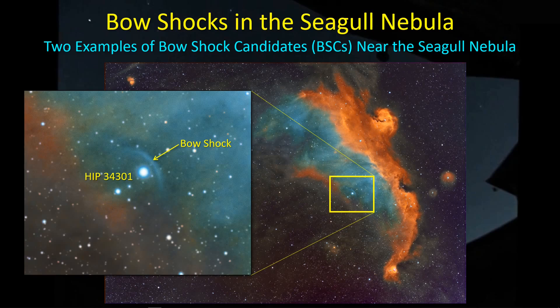Hey guys, welcome back. I've been doing some processing of images I took with the Red Cat 51 and the GT 81, using the ASI 294. The most recent one I completed is the Seagull Nebula. And as I was looking through the image of the Seagull Nebula, I noticed a few interesting features and ended up falling down a rabbit hole. Let's take a look.